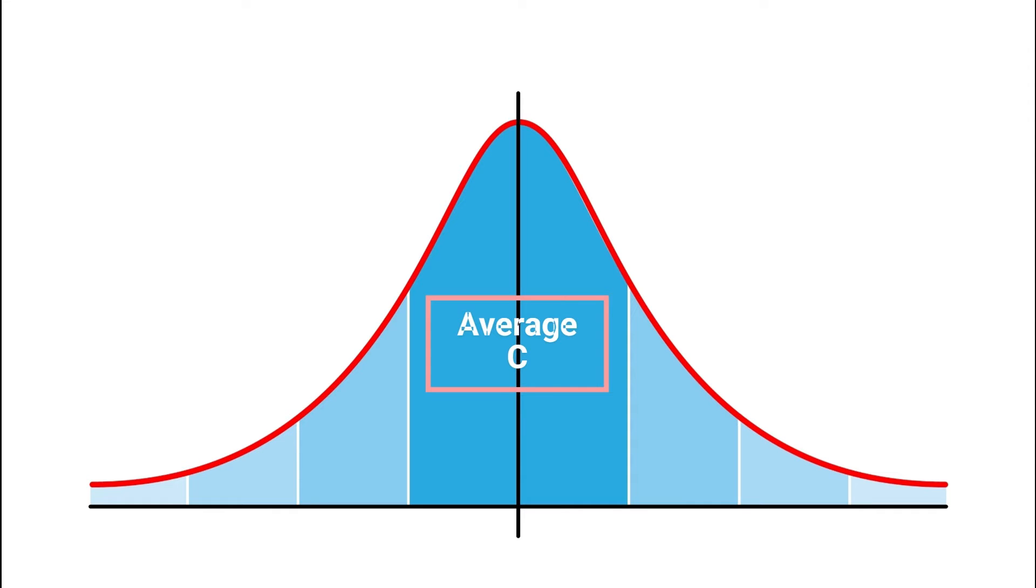Smaller areas on both sides would equate to a B or a D and then a small percentage of people will score very high or very low. Now what I drew here was very rough. We can actually come up with some pretty good figures using something called the empirical rule.